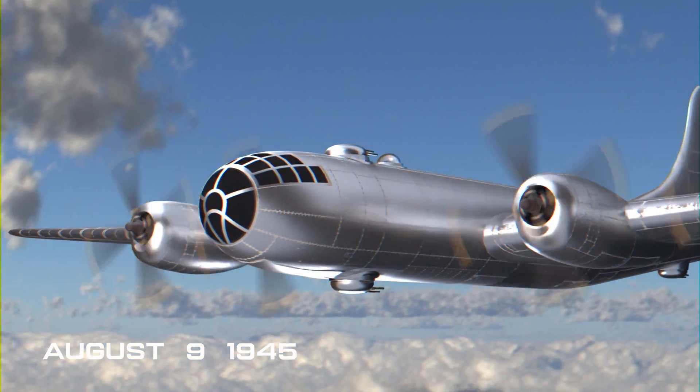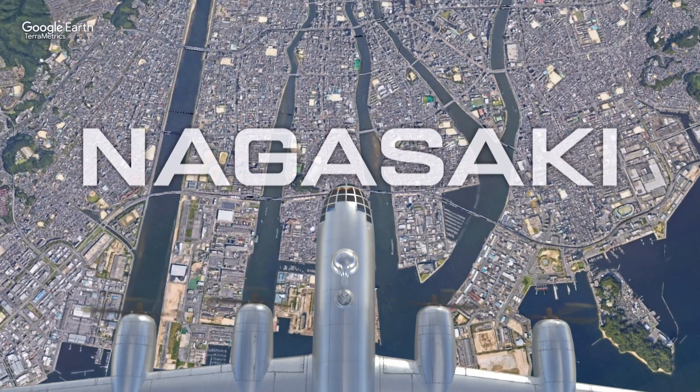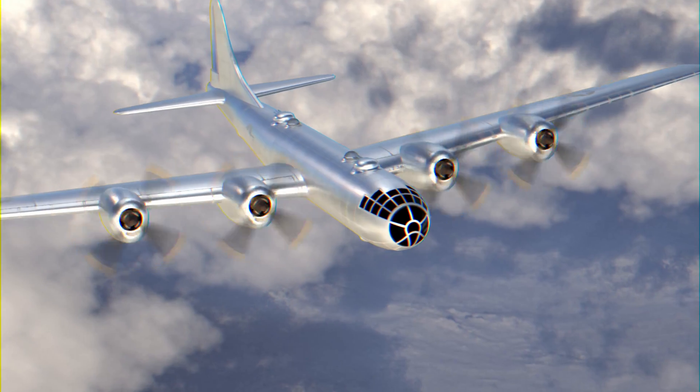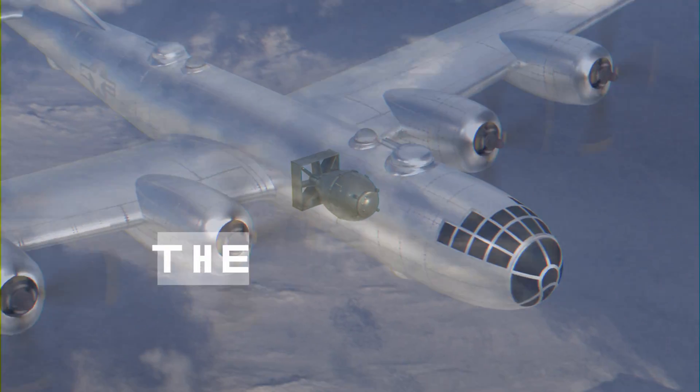August 9, 1945. An American B-29 bomber flew over the Japanese city Nagasaki at an altitude of 31,000 feet. The bomber was carrying a payload of nuclear bomb, codenamed the Fatman.